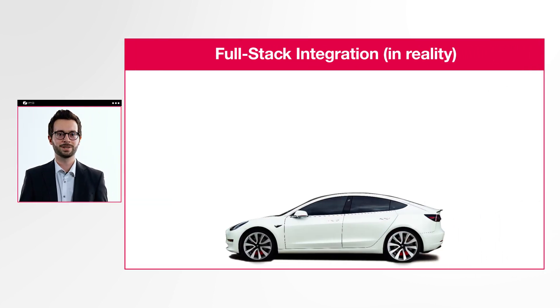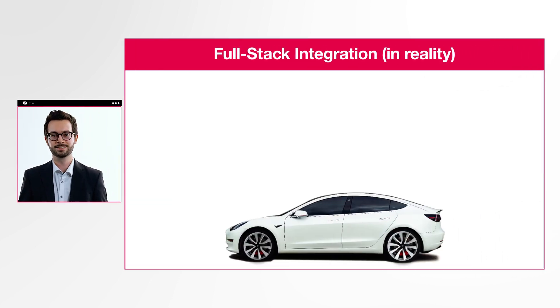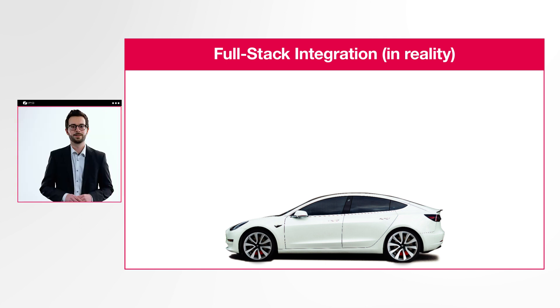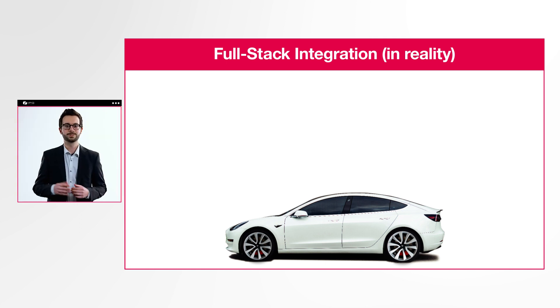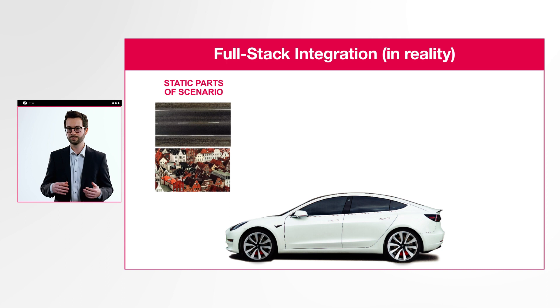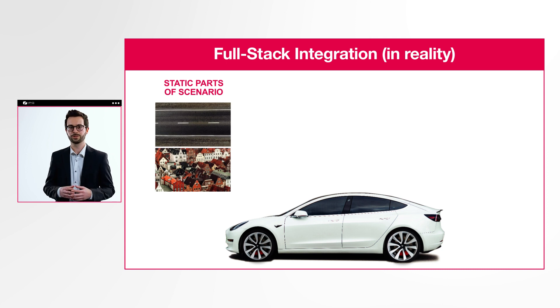Let's first take a look at how a typical autonomous vehicle works. Let's say we want to develop a robotaxi, so we first need to define its operational design domain, or ODD for short. The ODD consists of the static environment, the roads and infrastructure we want to operate in.